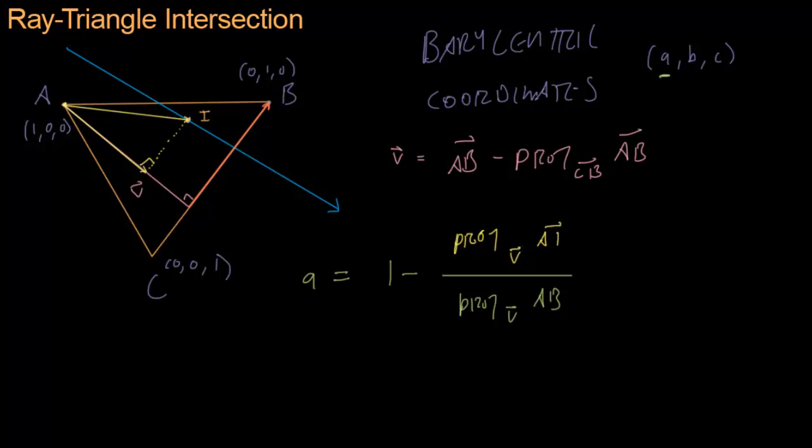Now we can simplify this. This is pretty easy to simplify if we just go back to the definition of a projection. We're projecting onto V, so that will be 1 minus V dot A, I over V dot V times V over, now we're projecting A, B, V dot A, B over V dot V times V. Now look at all this stuff that we have both in the numerator and the denominator. We can cross that out, cross that out, and cross all this stuff out. So finally we get A equals 1 minus V dot A, I over V dot A, B. Now we can actually simplify this more. In fact, we can simplify this a lot.